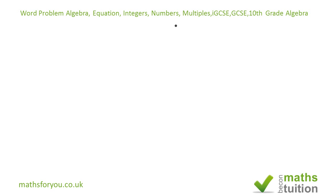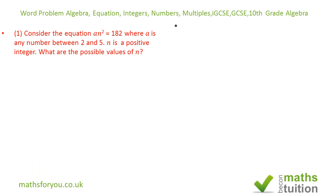There are two questions here. The first one says: Consider the equation an² = 182 where a is any number between 2 and 5. Now n is a positive integer. What are the possible values of n?